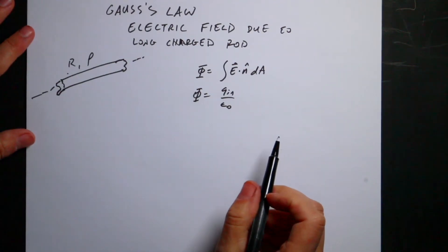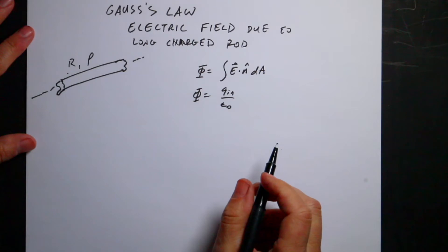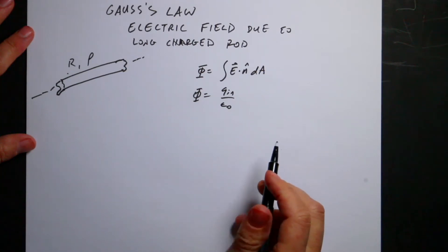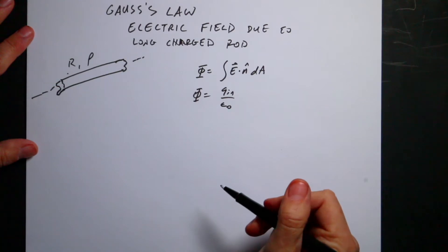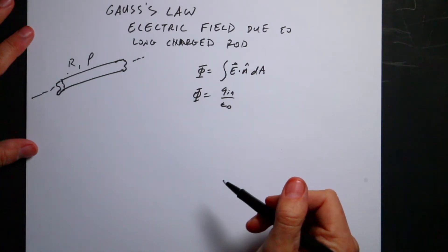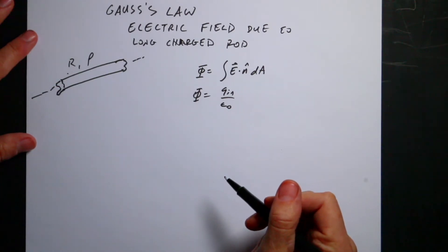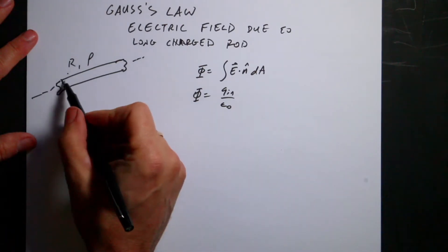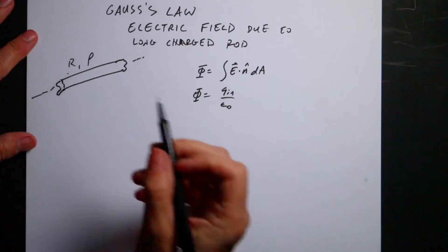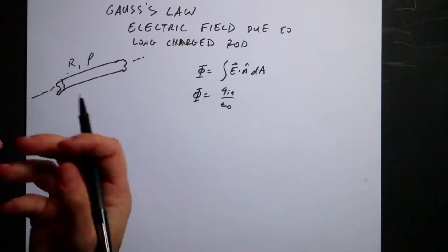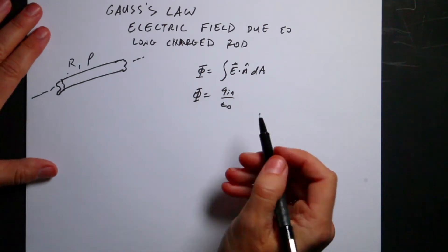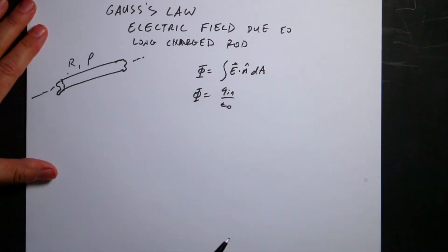I am working on some problems that use Gauss's law. I already did one for a solid sphere, and now I'm going to do an infinitely long charged rod. The rod has a radius of r and a charge density rho. Since it's infinitely long it has infinite total charge, so we work with charge density instead.